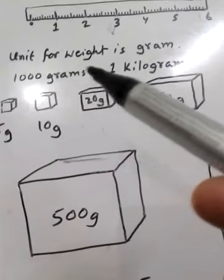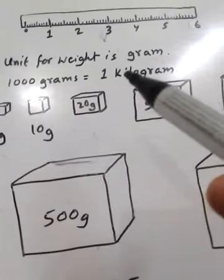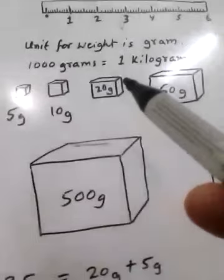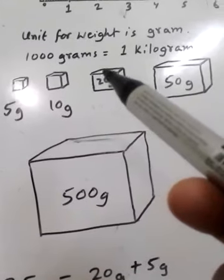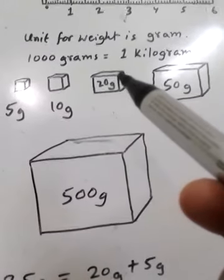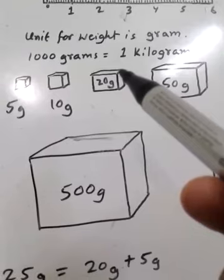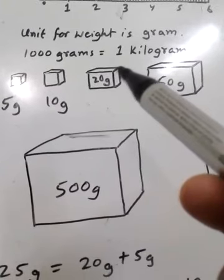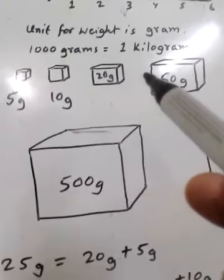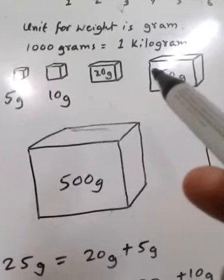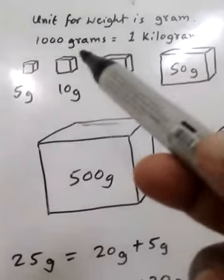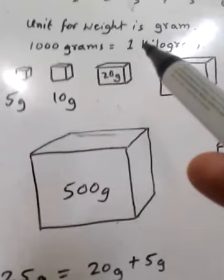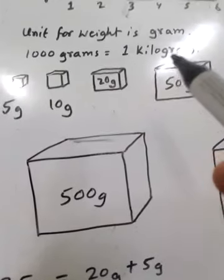The unit for weight is gram. To weigh something — like rice, sugar, or any groceries — we use a balance, and the unit we use is gram. The unit of weight is gram.